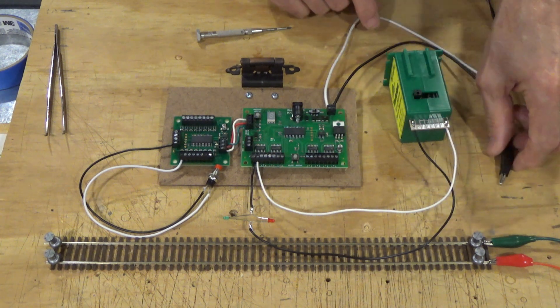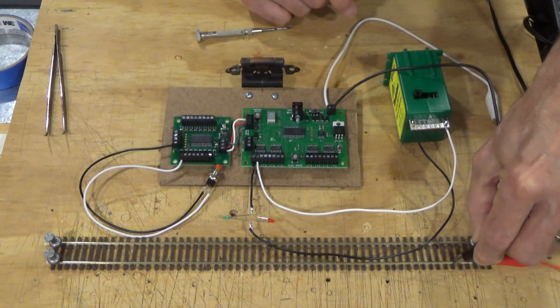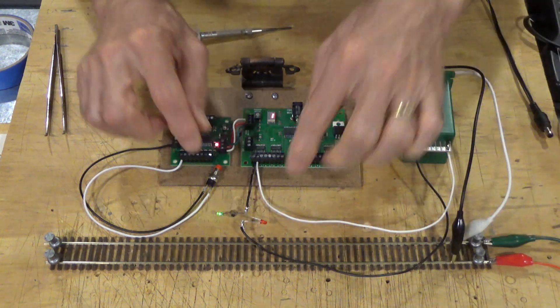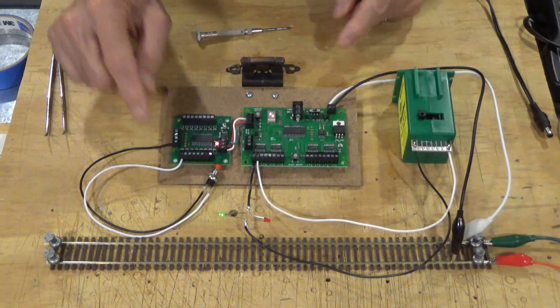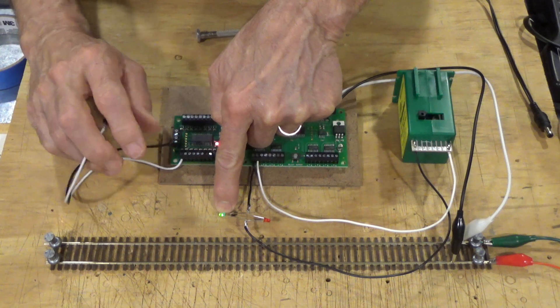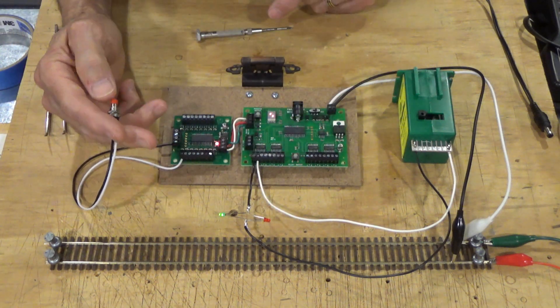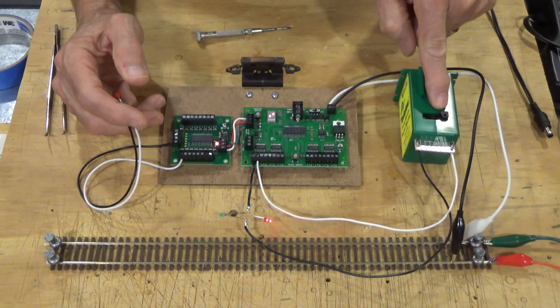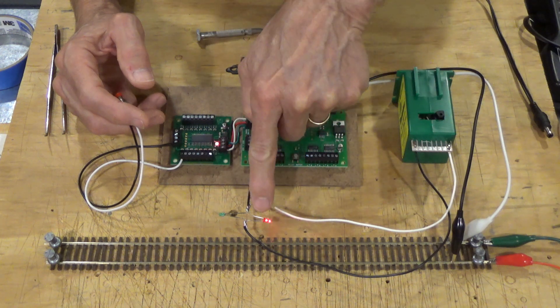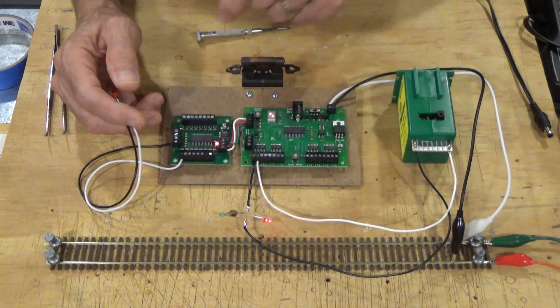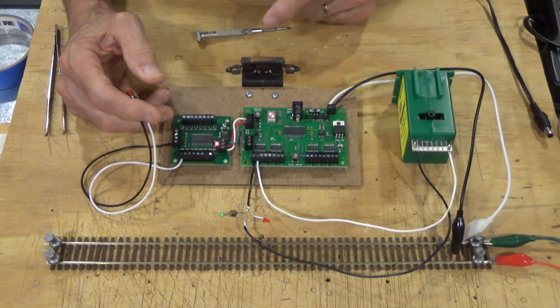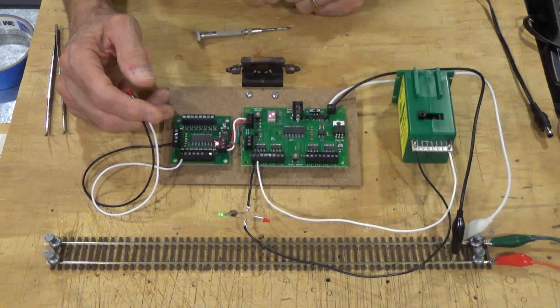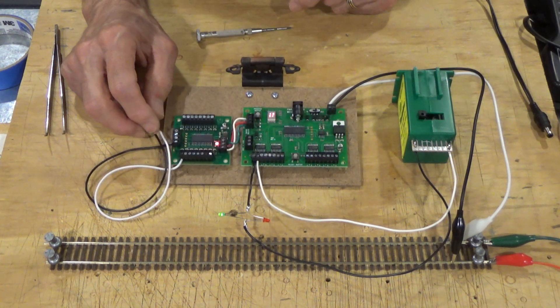I'm going to make a DCC connection by connecting the clip leads directly to the track. You can see we've gone hot, and the green light is on now. I'm going to push the push button. You can see the tortoise has changed position here, and we've switched, and the red light is on instead of the green light. Push it again, everything toggles back, the turnout returns to its other position, the green light is on, and we're waiting for another action.